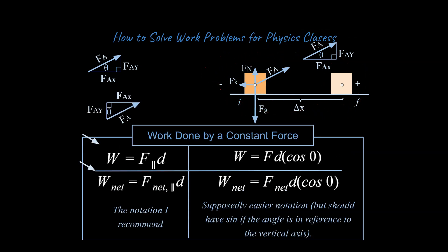Let's take a look at our equations. Work is equal to force parallel to the motion times the displacement through which that force is applied. This is the best and most clear way to think about work in physics. You can also add subscripts — the net work is equal to the net force times the displacement through which that force is applied. This is how it's typically presented in physics classes.